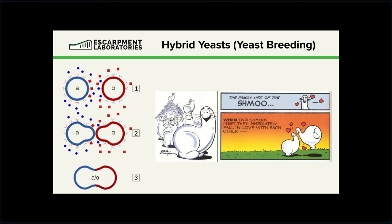I also think it's fun because this process involves two different strains with two different mating types — that's how this works. They exchange pheromones and do what's called schmooing, which is this process where the cells kind of extend out and touch each other, straight up just named after this cartoon. Yeast scientists are pretty creative — literally just named after this weird-shaped cartoon, the schmoo. I didn't know about this until I actually learned about yeast breeding and yeast genetics.